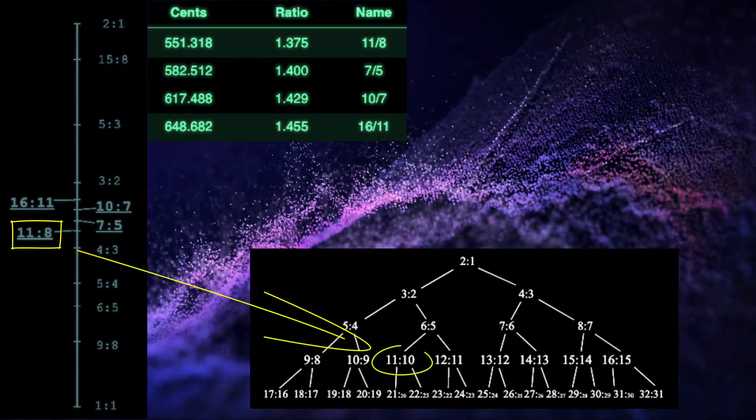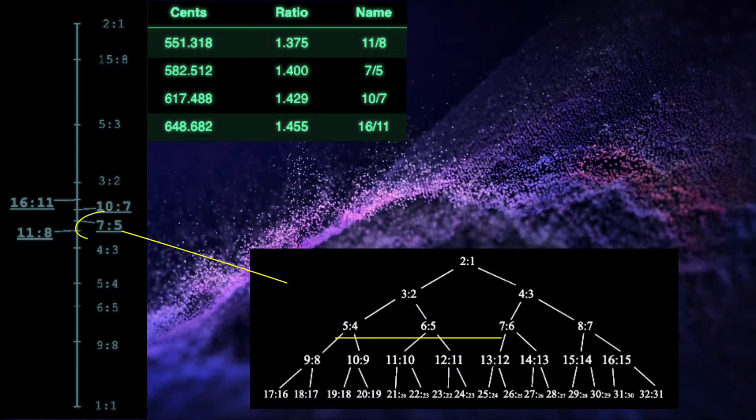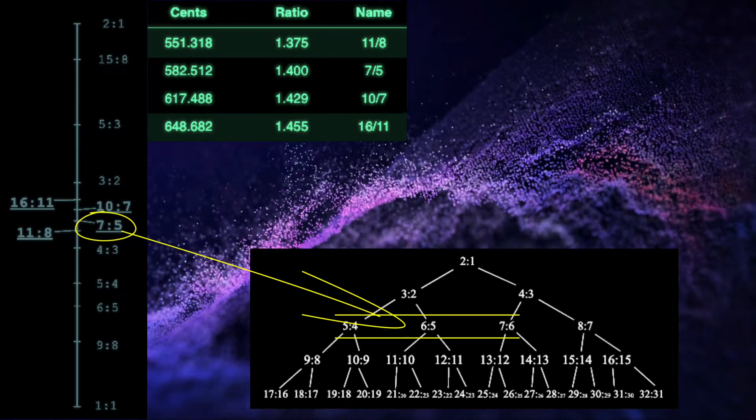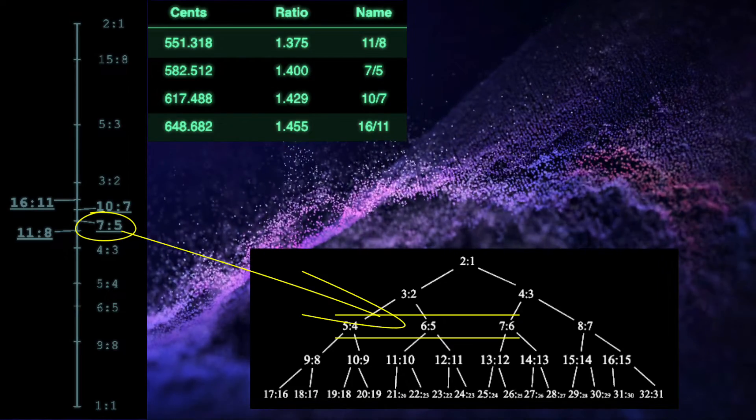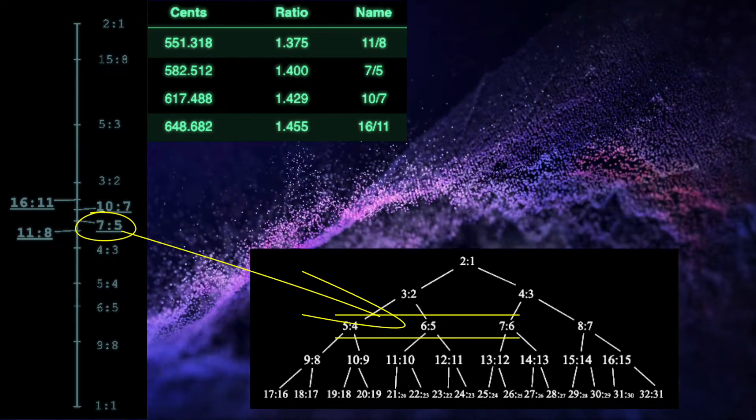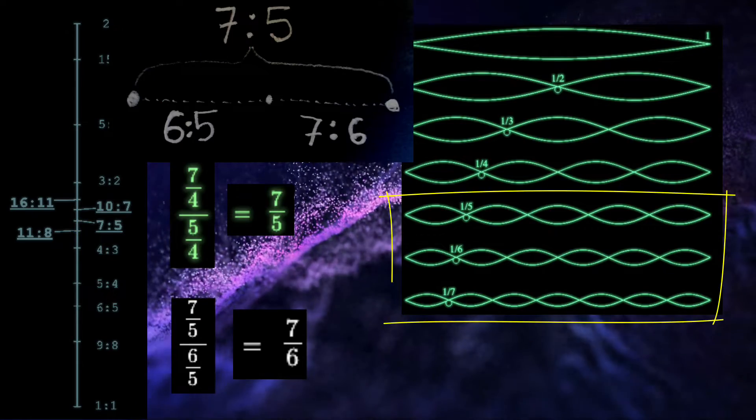Is it 11 over 8, the 11th partial? Or is it the 7 over 5, which also exists in the harmonic series, but found between the 5th and 7th partial? Two intervals added to one another.